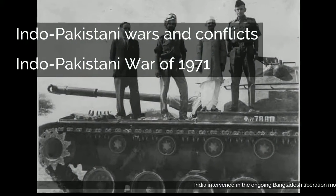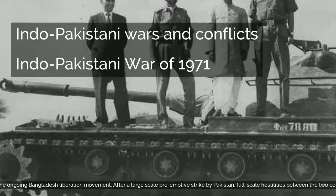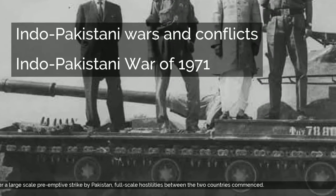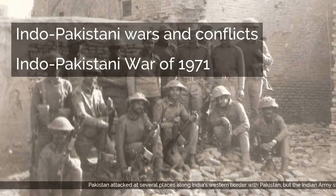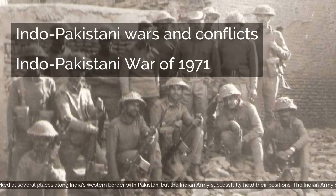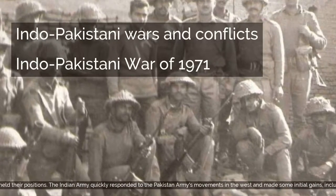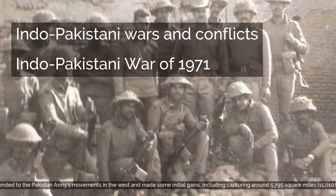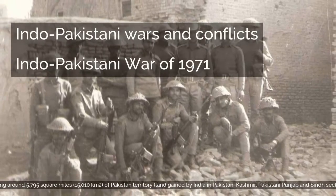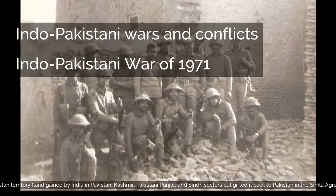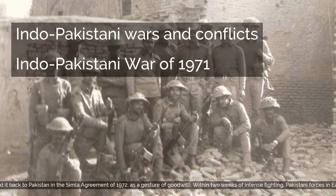India intervened in the ongoing Bangladesh liberation movement. After a large-scale preemptive strike by Pakistan, full-scale hostilities between the two countries commenced. Pakistan attacked at several places along India's western border, but the Indian army successfully held their positions. The Indian army quickly responded and made some initial gains, including capturing around 5,795 square miles (15,010 square kilometers) of Pakistan territory — land gained in Pakistani Kashmir, Pakistani Punjab, and Sindh sectors — but returned it to Pakistan in the Simla Agreement of 1972 as a gesture of goodwill.